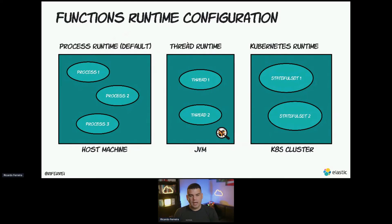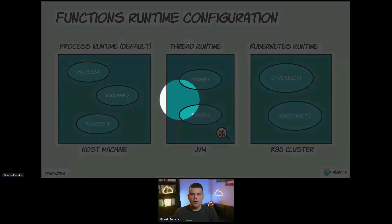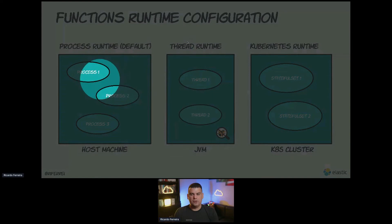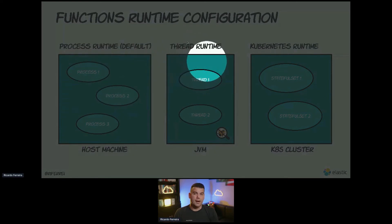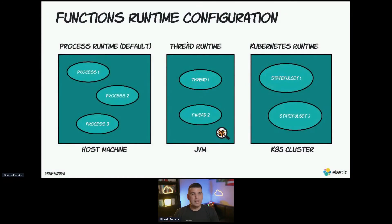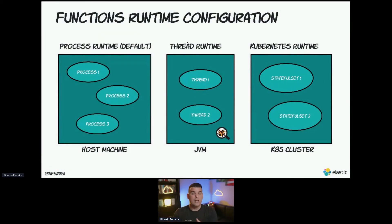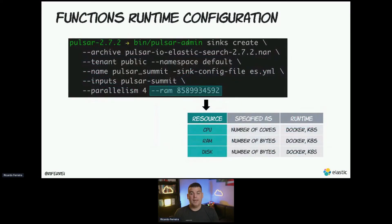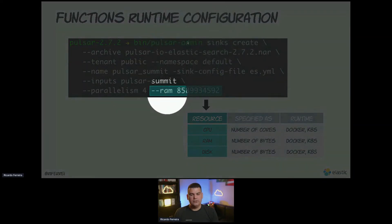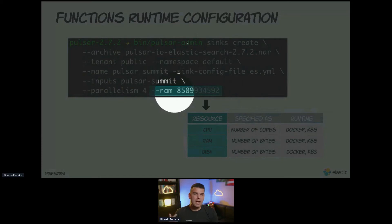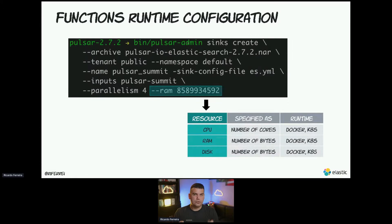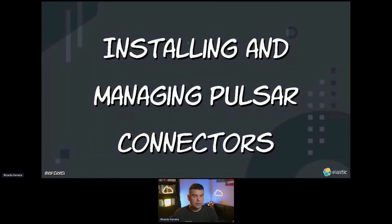Functions runtime has three configurations. By default, any function or connector you spin up becomes a process on the operating system — this is called process runtime. There's also thread runtime, where each connector executes as a thread in a given JVM, which is your function worker or broker. It's not very scalable but good for debugging purposes. If you're running Kubernetes, you can spin up one or multiple StatefulSets representing one instance of your connector. Additionally, when running on Docker and Kubernetes, you can specify resource allocations such as RAM, disk, and CPU when creating connector resources.